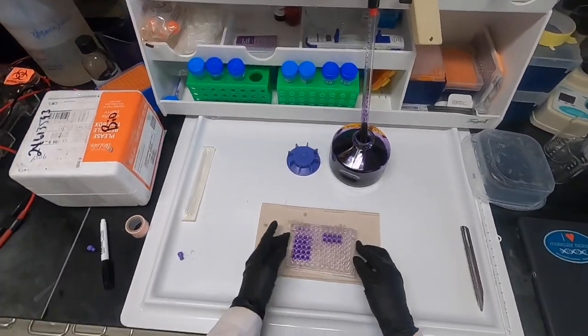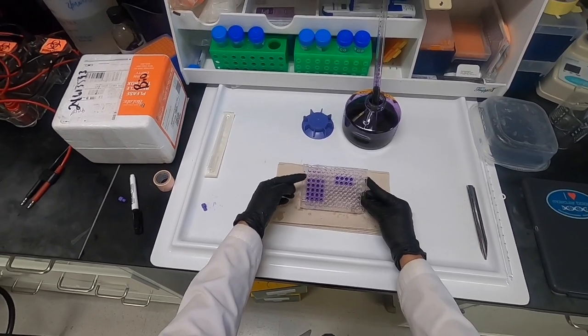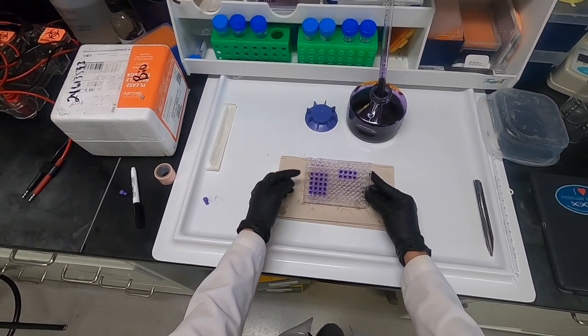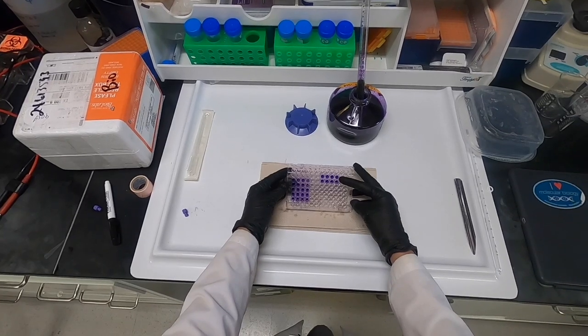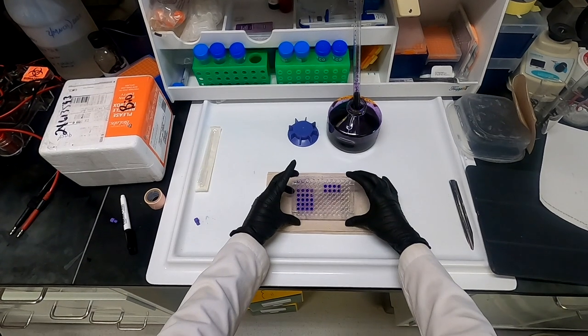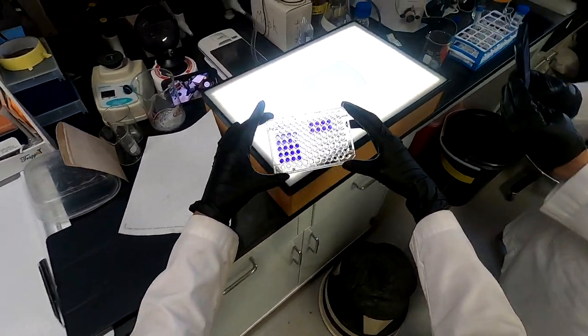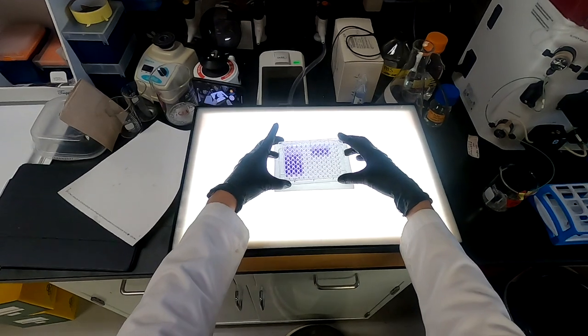If you remember from our diagram, you will see that there should be a gradient of cell death that is highest from the top and lowest at the bottom. You can also see that our positive control exhibits high toxicity while our negative and vehicle controls exhibit low toxicity or no toxicity at all.